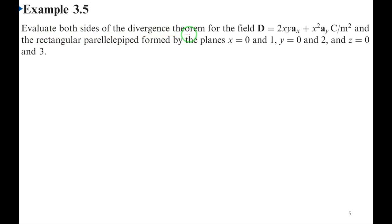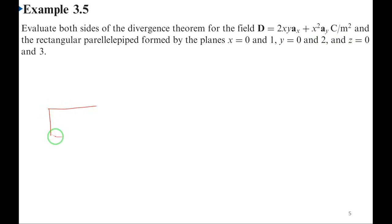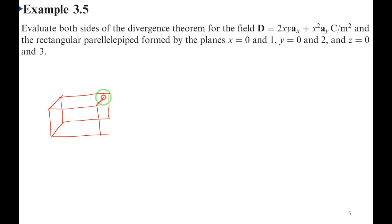Evaluate both sides of the divergence theorem for the field D vector = 2xy·ax + x²·ay (Dz is absent), and the rectangular parallelepiped formed by six planes: x = 0 and 1, y = 0 and 2, z = 0 and 3. This is a rectangular cube — I will draw the axes with x, y, and z.